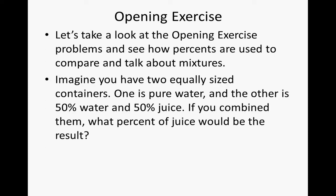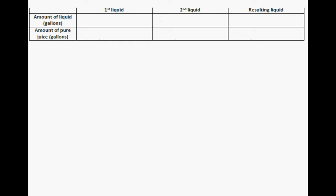Imagine you have two equally sized containers. One is pure water and the other is 50% water and 50% juice. If you combine them, what percent of juice would be the result? We have our chart — let's fill it out. The first liquid is one gallon. If that first gallon is pure water, then the quantity of juice would be zero, which is 100% times zero, meaning there's no juice. So the answer is zero amounts of pure juice.